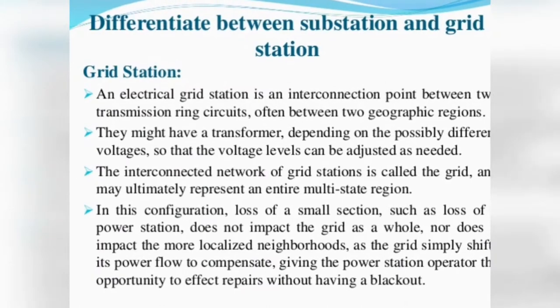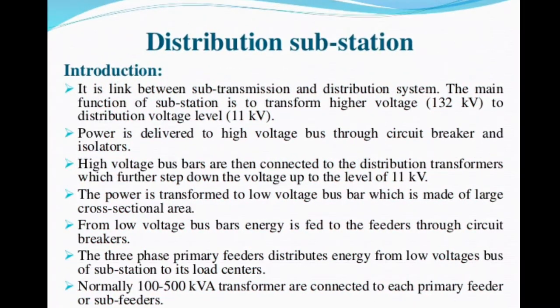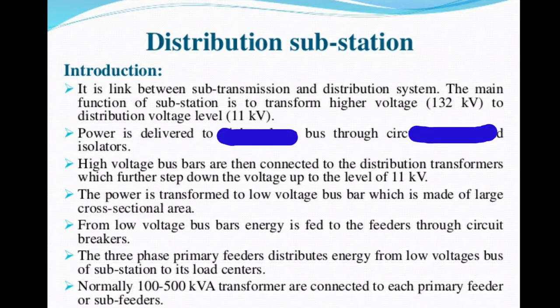There is a difference between a grid substation and a distribution substation. In a distribution substation, the voltage levels will be stepped down from 33kV through 132kV to 11kV. In a grid distribution substation, the voltage levels are 132kV to 11kV. The power is delivered to the high voltage bus through circuit breakers and isolators. High voltage bus bars are then connected to distribution transformers which further step down the voltage to 11kV. The distribution substation voltage level is 132kV to 11kV.